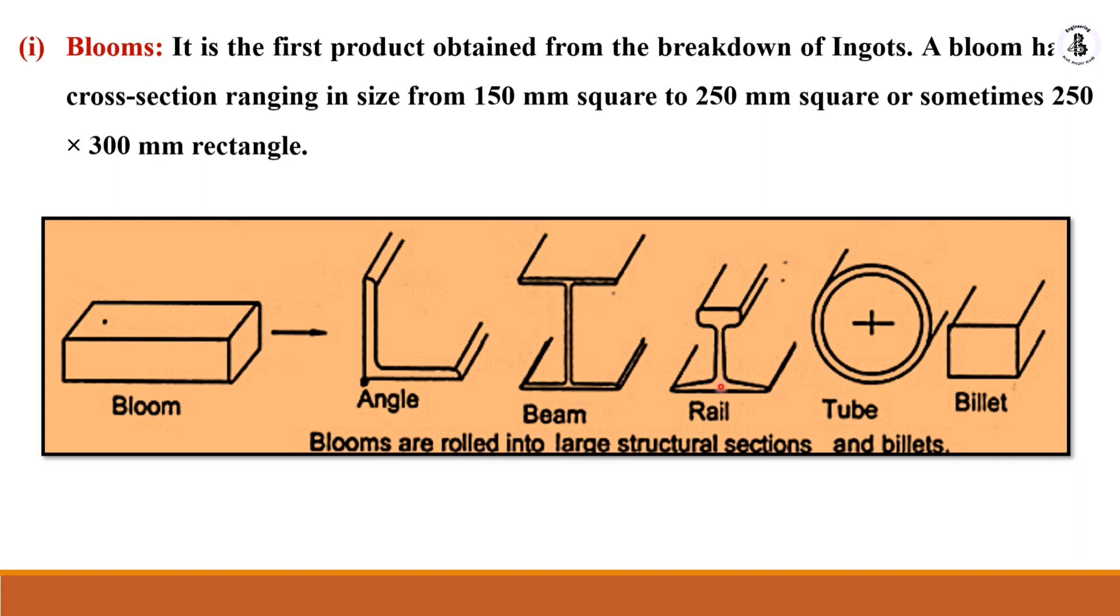rails for rail tracks, tubes by bending operations, and billets. Basically, blooms are converted into different sections, and these sections have wide applications in structures.